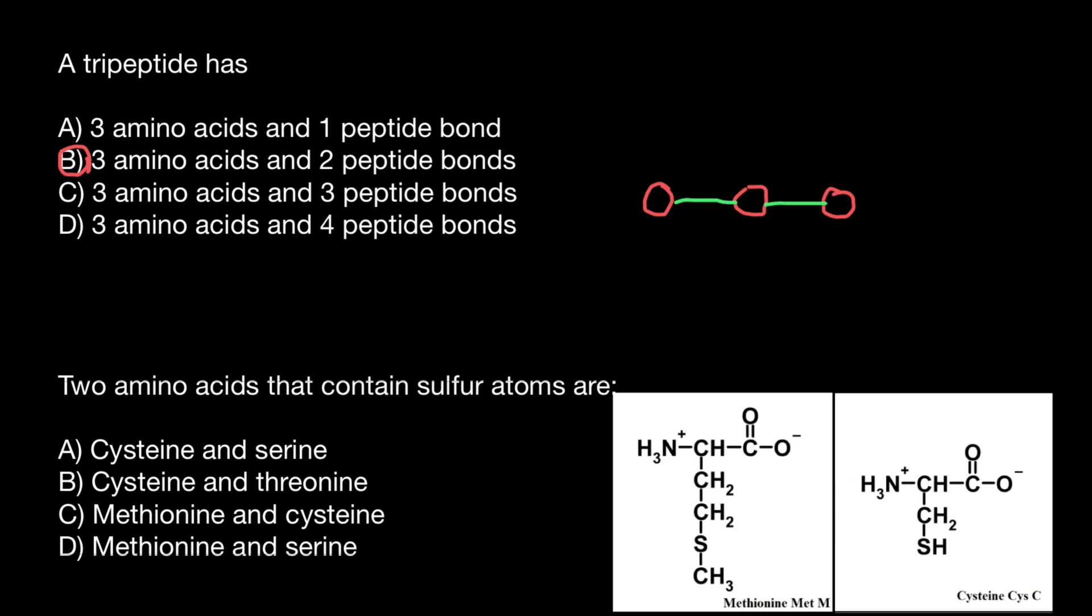And one of them is going to be essential, and one is not. Methionine is going to be essential. So let me highlight it with green color. So this one is going to be essential and cysteine is going to be non-essential.